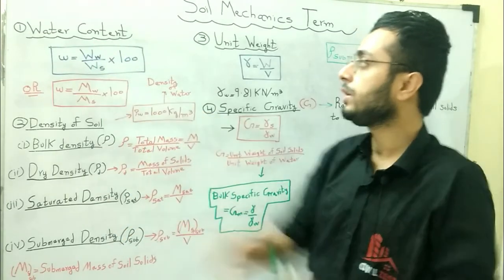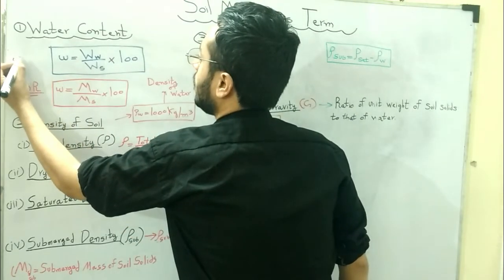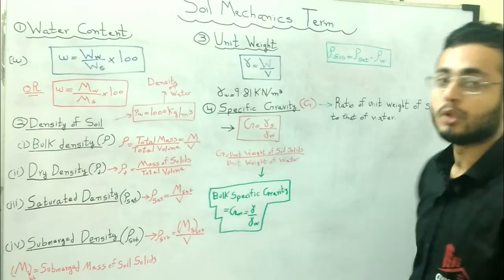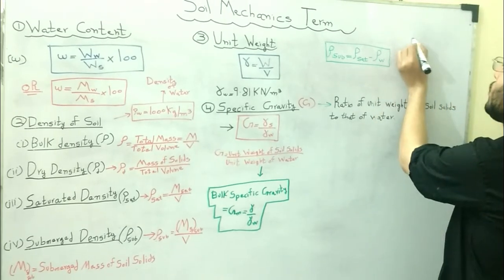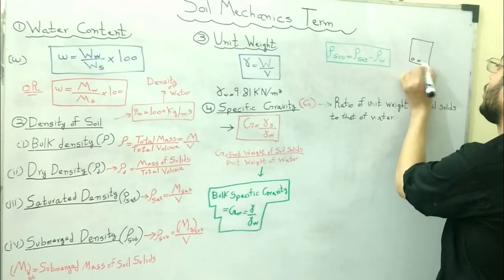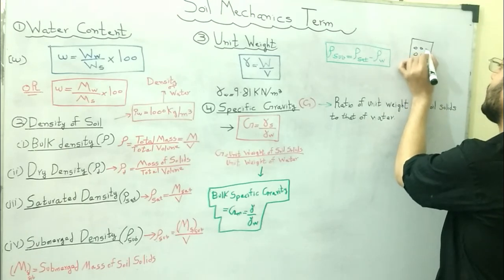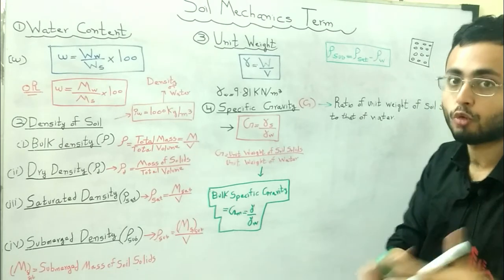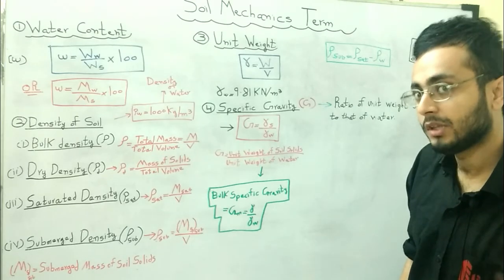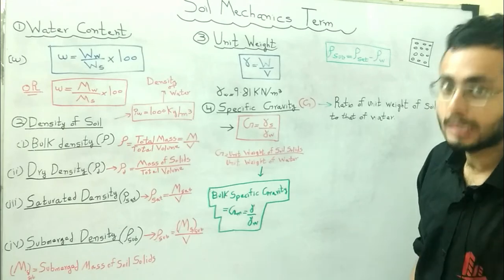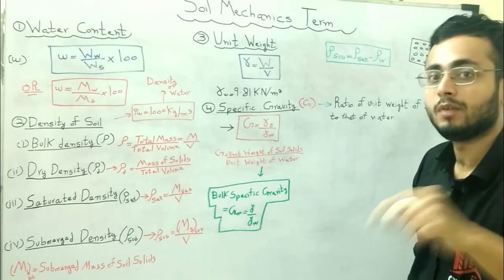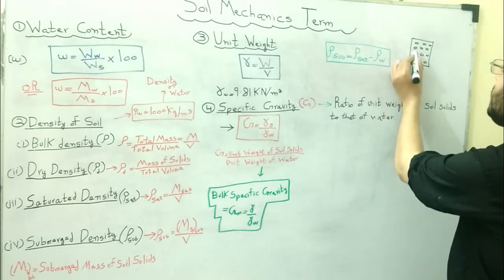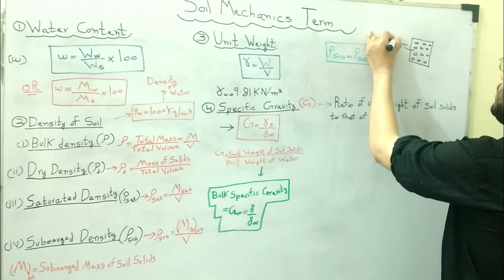Water content is denoted by small w. It is the ratio of weight of the water to the weight of the soil solids. In the structure of soil there are two components: soil particles, which are soil grains or soil solids, and voids. Voids can be filled with air or water. In dry soil they are filled with air, in fully saturated soil with water, and in partially saturated soil both air and water are present. Voids are the spaces between the soil solids.